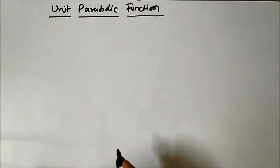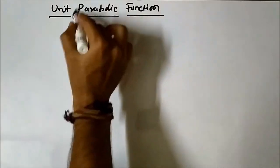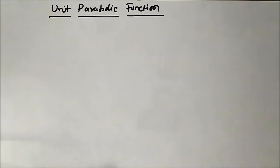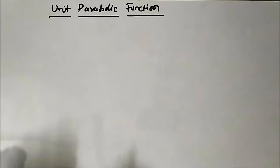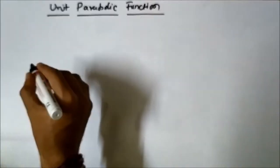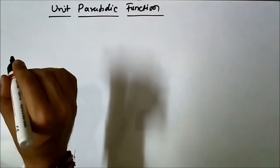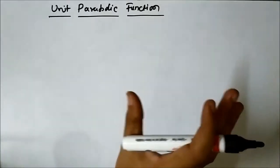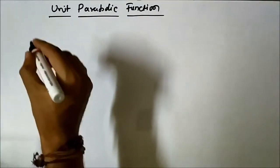By the term parabolic, you can make out that it has got something to do with a parabola. The shape of this function must resemble that of a parabola — and yes, it is. So let us first draw the parabolic function, and then we will discuss the continuous time and discrete time functional representations.